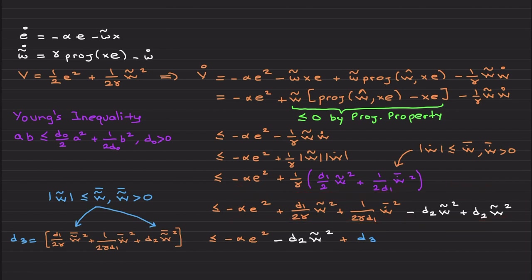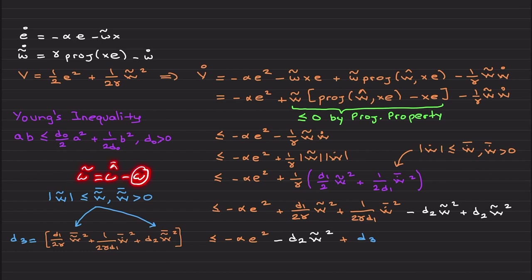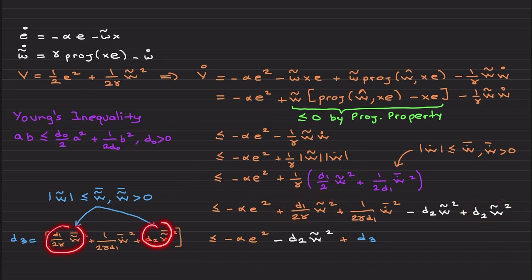Applying Young's inequality, you obtain this expression. Expanding these terms you arrive here. Now I add and subtract a term with positive constant d₂. Grouping the terms gives these nice negative terms, and d₃ is basically the remainder. Based on the projection operator, ŵ is bounded — and since W̃ = ŵ − w and w is bounded, W̃ is also bounded. There always exists a constant upper bound on W̃, which I use to upper-bound certain terms, all grouped into d₃.